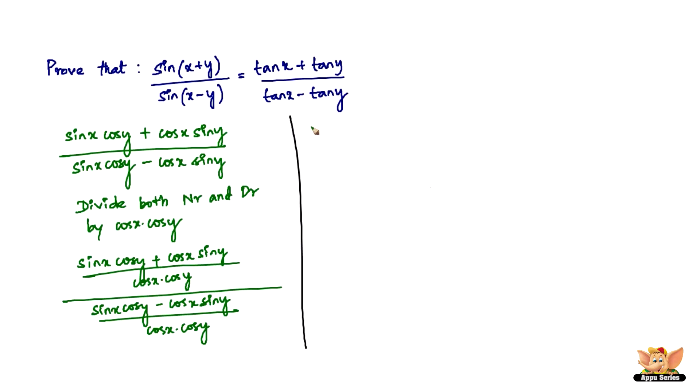So now what happens is just split them up. So that becomes sin x cos y divided by cos x cos y plus cos x sin y divided by cos x cos y. The whole divided by cos x cos y divided by cos x cos y minus cos x sin y divided by cos x cos y.